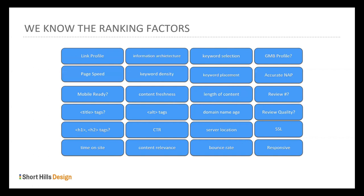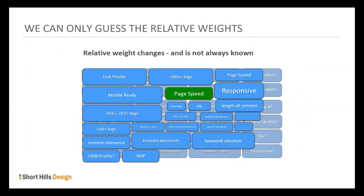No one has a special relationship with Google — this information is all available out there. What we don't know is the relative weights. I want to show you, for example, mobile readiness might be more important than whether your server is located in the right country. Whether you have alt tags on your images — is that more important than your page speed? The truth is, we don't know.